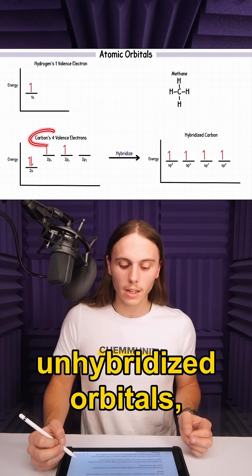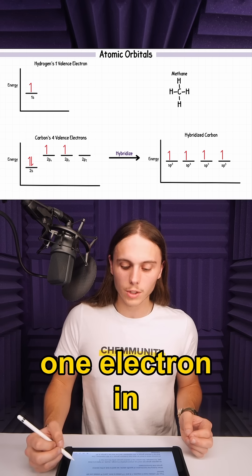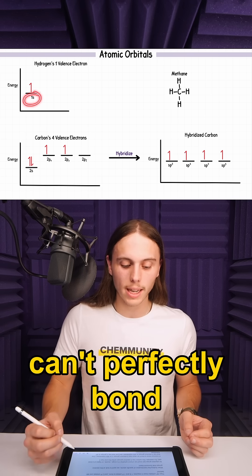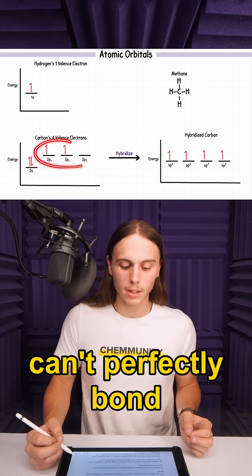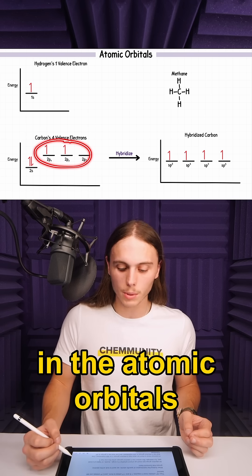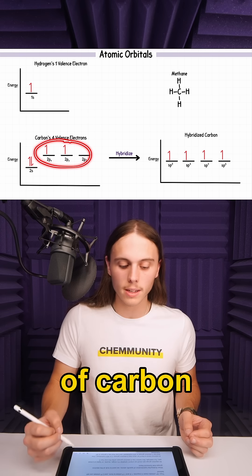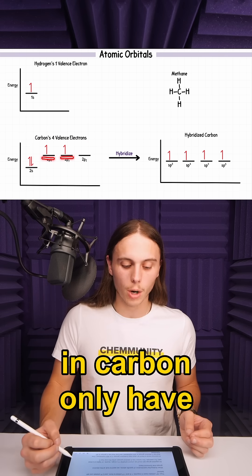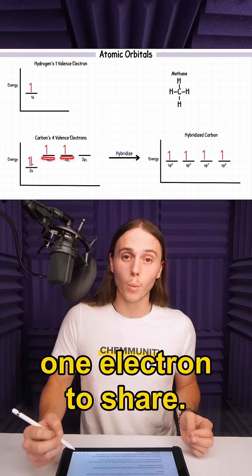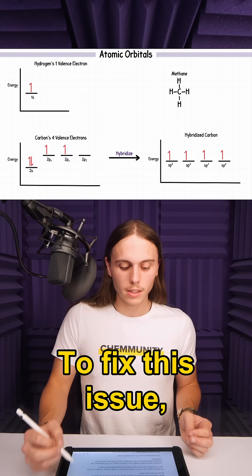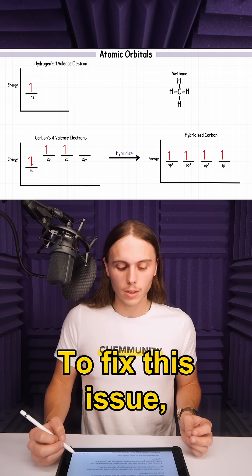But if we look at the unhybridized orbitals, one electron in hydrogen's s orbital can't perfectly bond with one electron in the atomic orbitals of carbon, since only two orbitals in carbon only have one electron to share. To fix this issue,